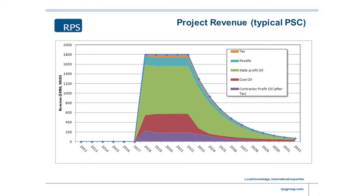So the final product of that would be a diagram like this, which shows you the revenue on an annual basis for a typical field — similar to the production profile I showed earlier. You can see that the top of all the bars is the total gross revenue of the field. The orange slices in this particular example is the income tax payable. The blue at the top is the royalty. The green is the state's share of profit oil — which is always much bigger than the contractor's share. At the bottom, you've got the red, which is the cost oil, and the contractor's share of the profit oil after tax. And of course if there's a national oil company, then part of the red and part of the purple also goes to the government through the national oil company, so the international oil company's share is even smaller than it looks.